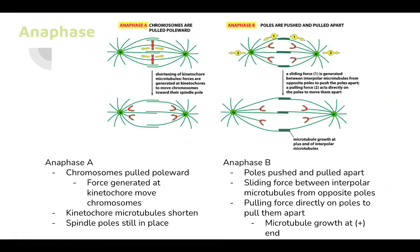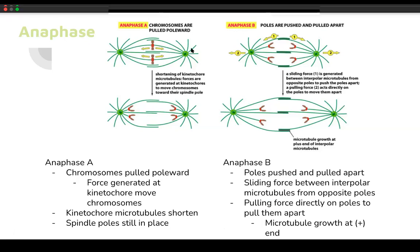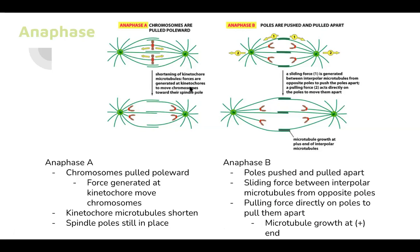Anaphase is split into two sections: anaphase A and anaphase B. In anaphase A, chromosomes are pulled towards the poles — the force generated at the kinetochore moves the chromosomes. The kinetochore microtubules shorten and the poles stay in place. In anaphase B, the poles are pushed away and pulled apart by sliding forces between the interpolar microtubules from opposite poles. Microtubule growth is at the positive end — the interpolar microtubules shorten toward the centrosome and the poles are pulled apart.